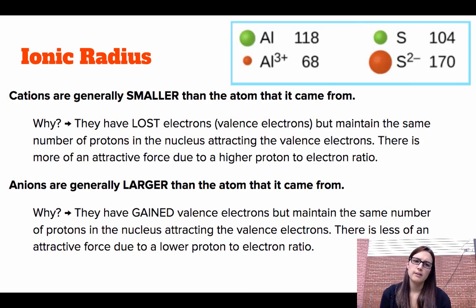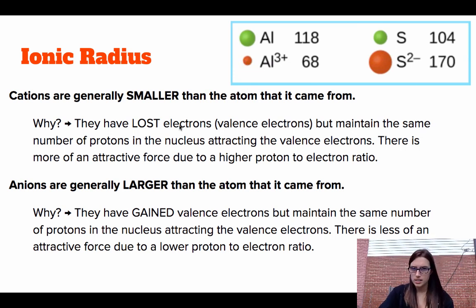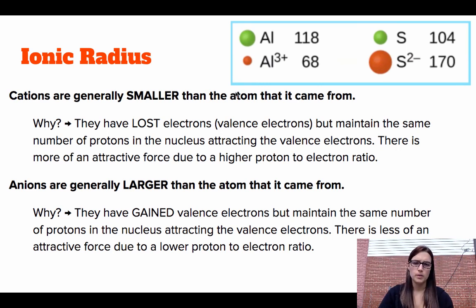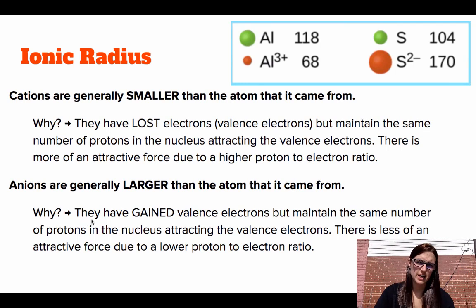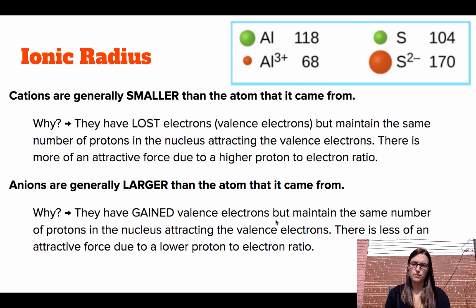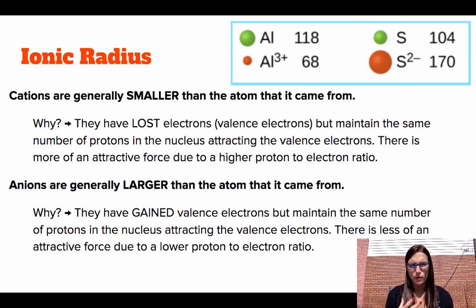For ionic radius, remember it differs for cations and anions. Cations are generally smaller than the neutral atom — for example, Al³⁺ is smaller than Al — because they have lost valence electrons but still have the same number of protons, creating a stronger attractive force since there are more protons than electrons. Anions are generally larger than the neutral atom — for example, S²⁻ is larger than S — because they have gained valence electrons but still have the same number of protons, resulting in less attractive force. You can also note that the added electrons create repulsive electron-electron forces.